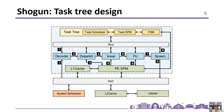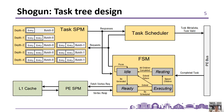Existing graph mining accelerators adopt a task stack for DFS or pseudo-DFS scheduling order. In Shogun, a task tree structure is applied in place of the task stack, taking both parallelism and locality into consideration. The task tree in the PE pipeline decouples task generation and task execution. It includes a task scratchpad memory to store task information and relationships, a finite state machine to control the search tree exploration, and a task scheduler to determine the execution order. Based on the task tree design, Shogun further includes two accelerator optimizations in terms of load balance and search tree merging.